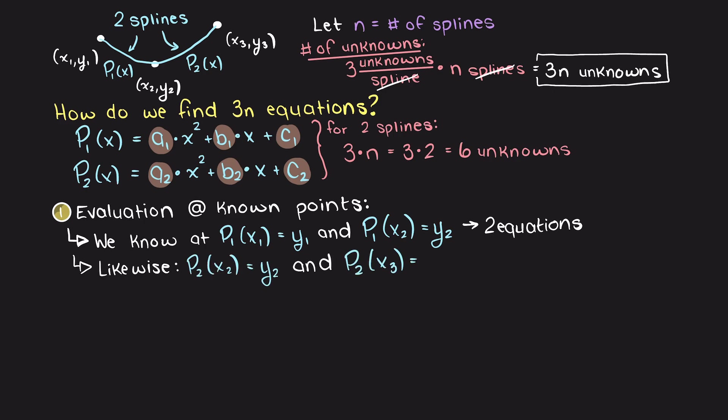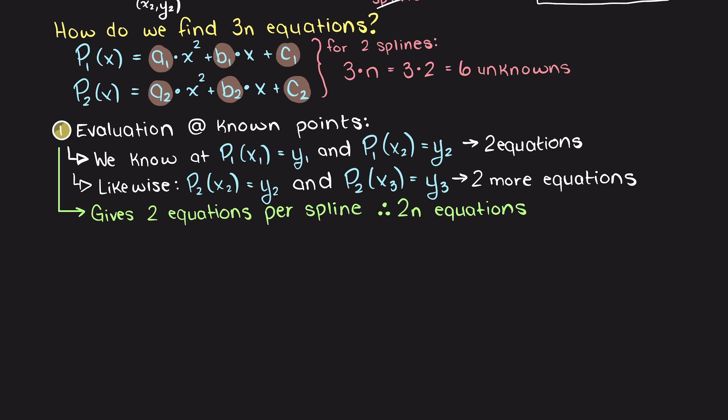Similarly, this is true for p2 of x. Therefore, this gives us 2n worth of equations as every spline is going to guarantee us two equations that we can use to solve. So for our above example, this will give us 4 of our 6 equations that we need.